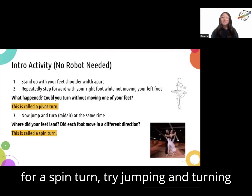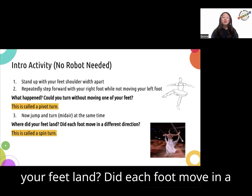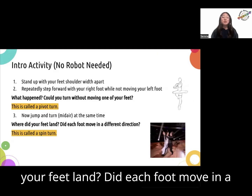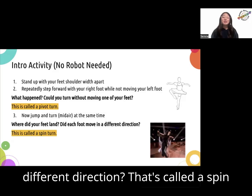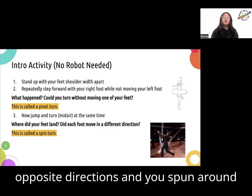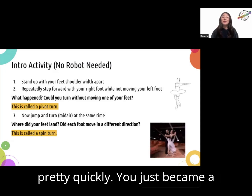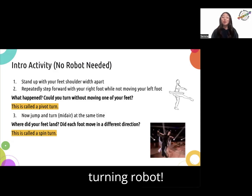Now for a spin turn, try jumping and turning at the same time in midair. Where did your feet land? Did each foot move in a different direction? That's called a spin turn because both of your feet moved in opposite directions and you spun around pretty quickly. You just became a turning robot.